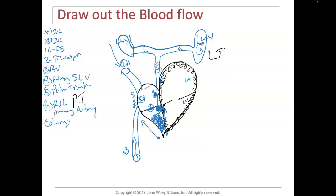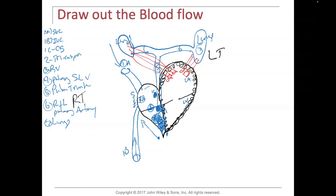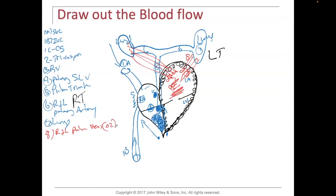We pick up oxygen in the lungs and dump the CO2. Now this oxygenated blood finds its way into the left atrium. We're using red here because it's dumping all the oxygenated blood into the left atrium. Number eight will be the right and left pulmonary veins — veins bring blood to the heart. This blood is oxygenated, and it fills up the left atrium.